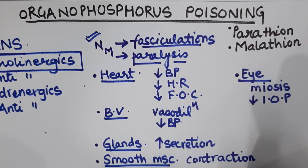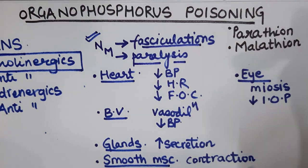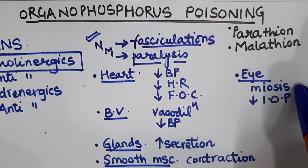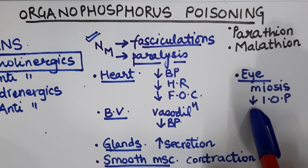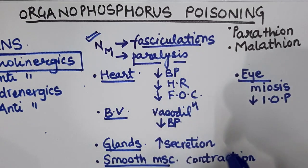On the detrusor muscle, cholinergics increase contraction and relax the trigonal sphincter, aiding urination. On the eye, they cause miosis — contraction of the pupil — and decrease intraocular pressure. These are the main effects produced by cholinergics.